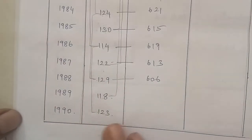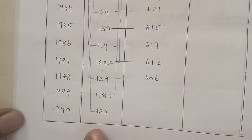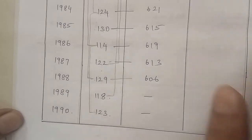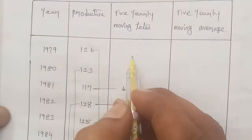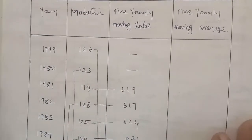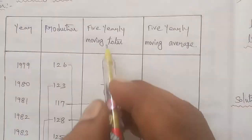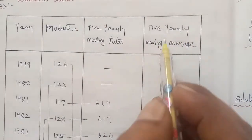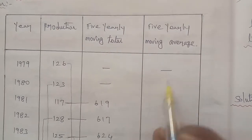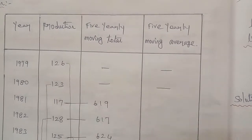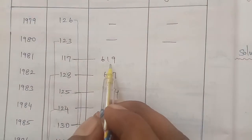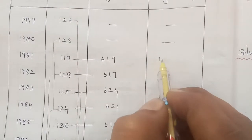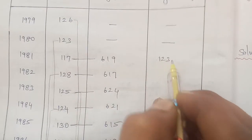The remaining rows have dashes where no moving total is possible. Now for the 5-year moving average column, take the moving total 619 and divide by 5 to get 123.8. Enter this as the first moving average value.